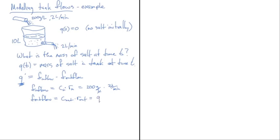In this example the concentration going out equals the concentration in the tank, which is q — the mass of salt — divided by the volume of the tank, multiplied by the outflow rate r_out. Putting in numbers: r_out is two liters per minute, volume is 10 liters, so we get (2/10)·q. The liters cancel and we're left with q divided by minutes — grams per minute.